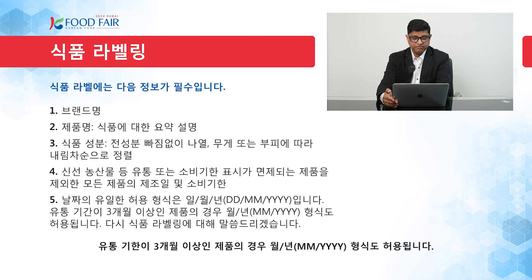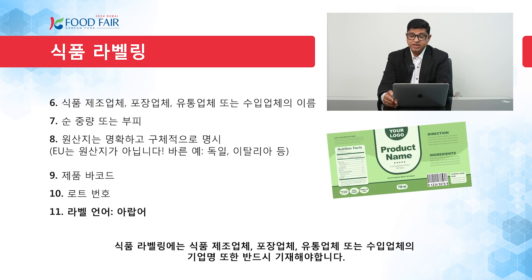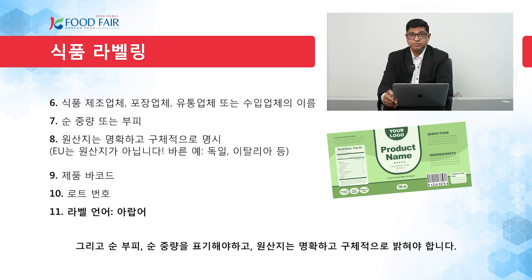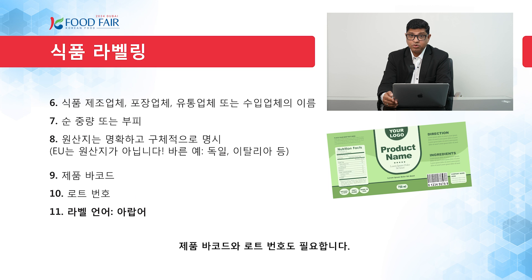For products with a long shelf life, less than three months, MM/YYYY is accepted. Regarding food labeling requirements, the name of the food manufacturer, packer, distributor, or importer is required. Net volume and net weight must be stated. Country of origin should be declared clearly and specifically — for example, 'EU' is not an accepted country of origin; you need to mention Germany, Italy, or France, etc. Products barcode is required, lot number is required, and the language of the label must be Arabic.